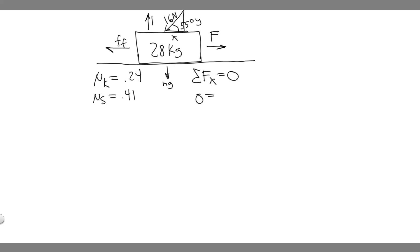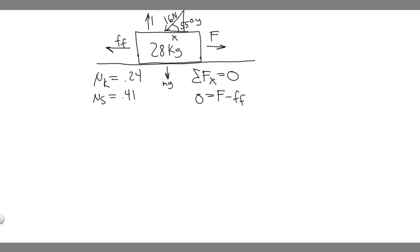So: zero equals F minus the force of friction minus the x component of the angled force. Things going to the right are positive and things going to the left are negative. So F minus the force of friction is negative, and we also subtract the x component of the 16-newton force. Let's find that x component. We're redrawing this triangle: it's 16 newtons at 55 degrees, and we want to find both the x and y components.